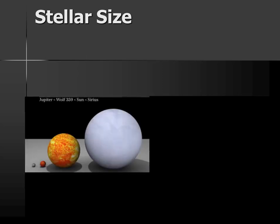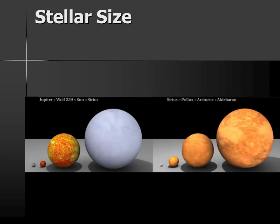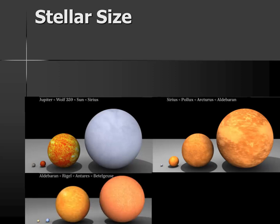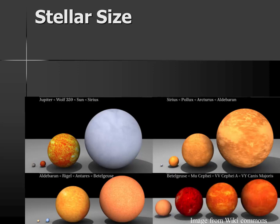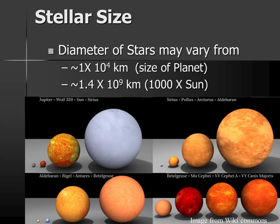There's a well-known set of images that have circulated social media about comparing the size of stars. Here we see Jupiter and Wolf 359, one of the smaller known stars. Beside that is our Sun, followed by the star Sirius. In this next set, we start with Sirius and gradually move up to the giant red star Aldebaran, then on through Rigel, Antares, and Betelgeuse — an extremely large red supergiant. Finally, we go from Betelgeuse to Canis Majoris, one of the largest known stars. We can see a tremendous variation in the size of stars — from as small as a planet to over a billion kilometers across, more than a thousand times the size of the Sun.